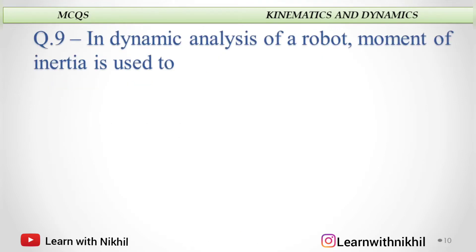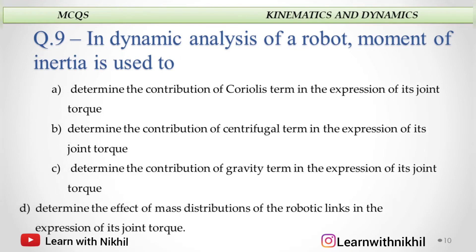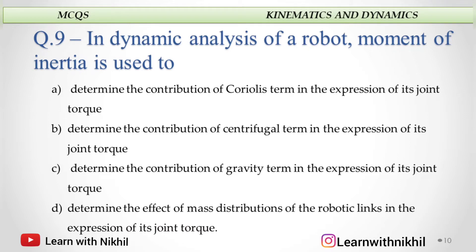In dynamic analysis of a robot, moment of inertia is used to determine the effect of mass distribution of the robotic link in the expression of its joint torque. The distribution of mass is very important in the robot to maintain its center of gravity — that is moment of inertia.